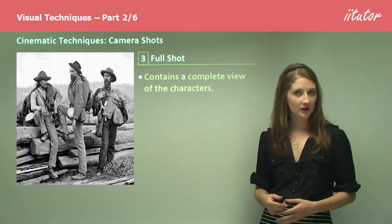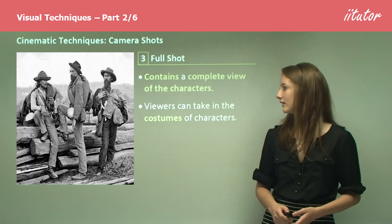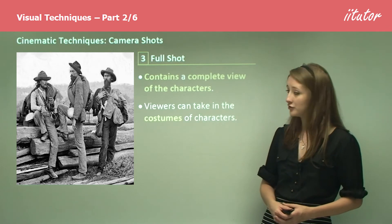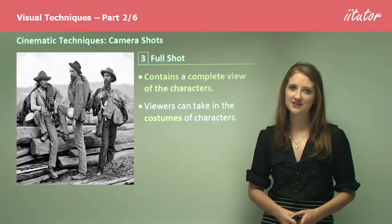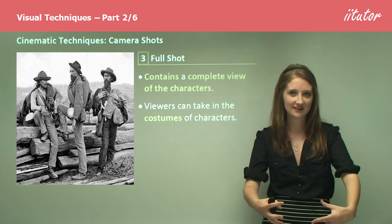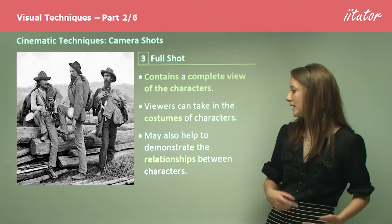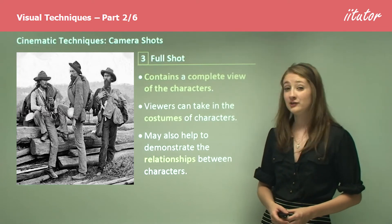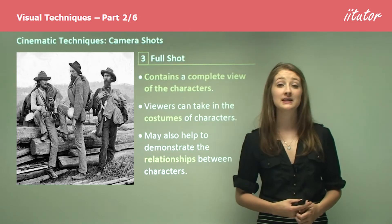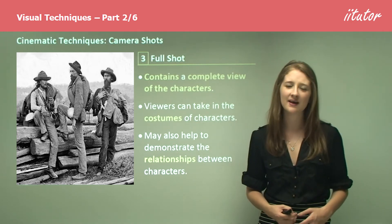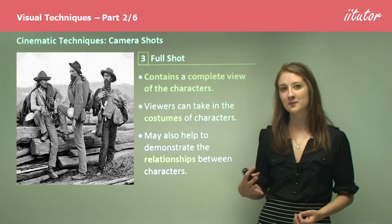Thirdly, we move to the full shot. The full shot contains a complete view of the characters, and viewers can take in the costumes of the characters through this. It's quite a good orienting shot — for the first time you get to see the characters in more detail rather than from a really long distance away. It may also help demonstrate the relationship between the characters. At this point you might be seeing body language, appearance, clothing, makeup — you're really getting oriented to the characters who are going to make up that movie.